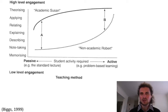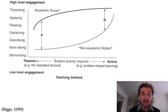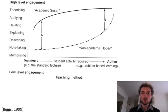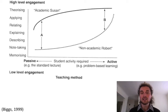We now know that with the massification of higher education we don't have as many academic Susans as we have non-academic Roberts, and it's through good course design, through good curriculum and through good constructive alignment that we are able to get these non-academic Roberts to achieve those higher level learning outcomes.